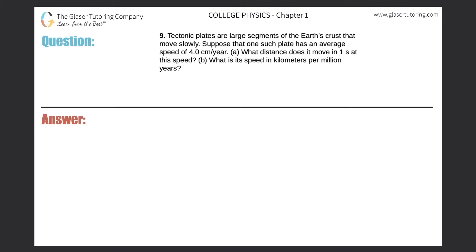Tectonic plates are large segments of the Earth's crust that move slowly. Suppose that one such plate has an average speed of 4 centimeters per year. What distance does it move in one second at this speed?